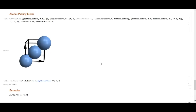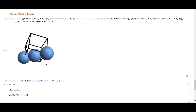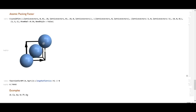For the atomic packing factor of an FCC structure, instead of the body diagonal we use the face diagonal of a square. The face diagonal is √2 times the lattice length. Since there are four radii along this diagonal, the radius is (√2 × a) / 4. With four atoms per unit cell and this radius, the APF is 0.74 — the highest possible for atoms of the same radius. For mixtures of atoms with different radii, it gets more complicated.